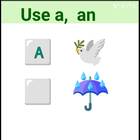Next, umbrella. The first letter of umbrella is U. U is vowel and single. So we use article AN.